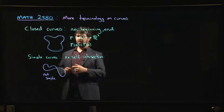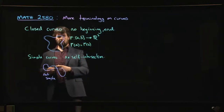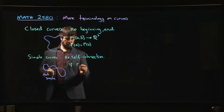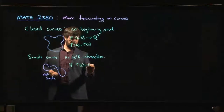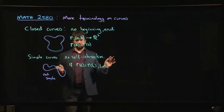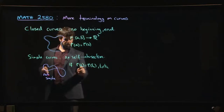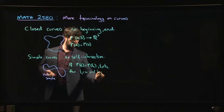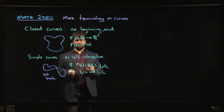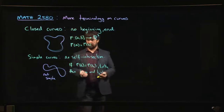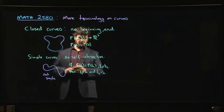In terms of a parameterization, one way to think about what it means for a curve to be simple is this: if r(t₁) equals r(t₂) with t₁ less than t₂, the only way you get the same value for two different parameter values is at the endpoints — so t₁ equals a and t₂ equals b. Other than the endpoints of the interval, which both map to the same place, there are no other pairs of different t values giving the same point on the curve. That guarantees no self-intersection.